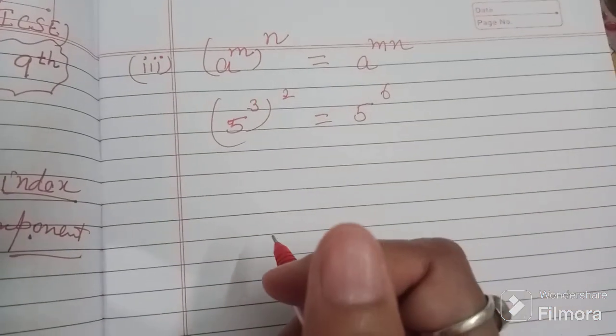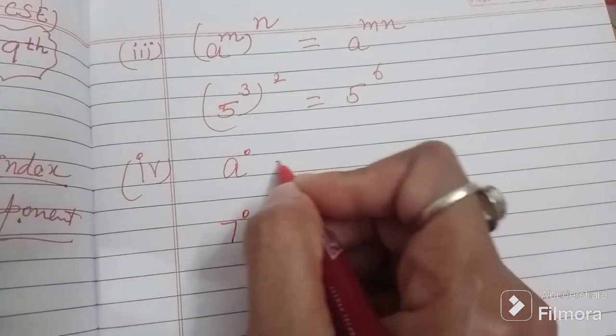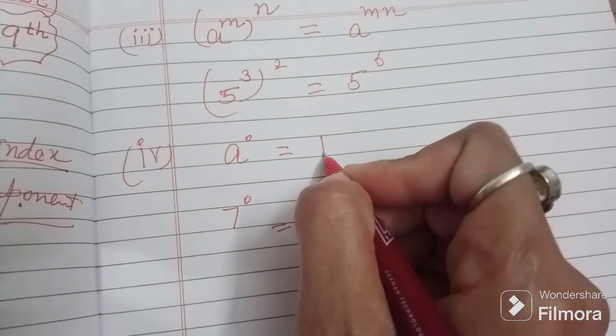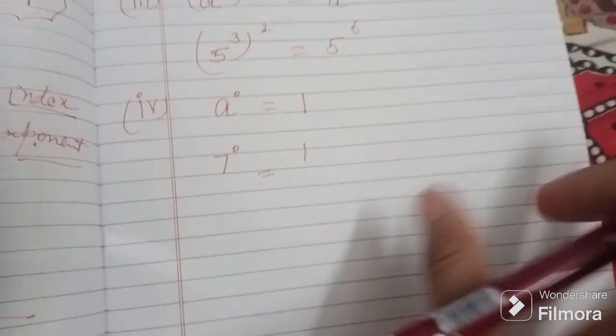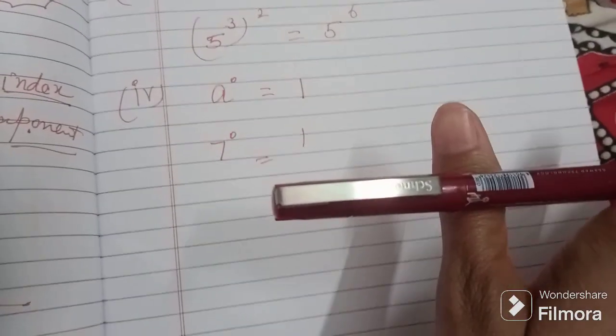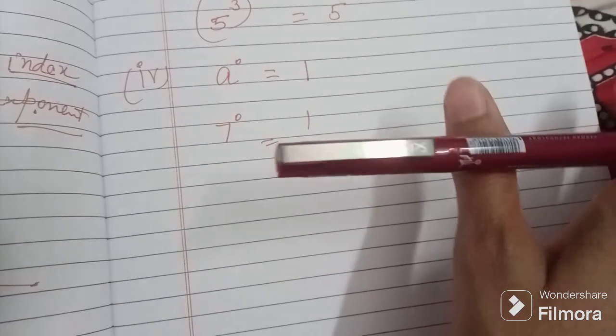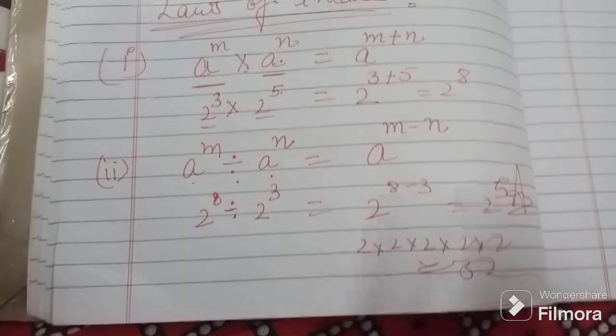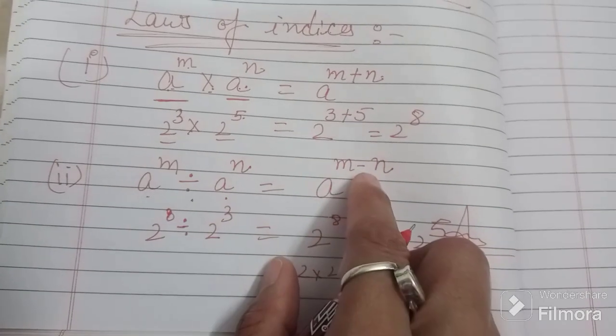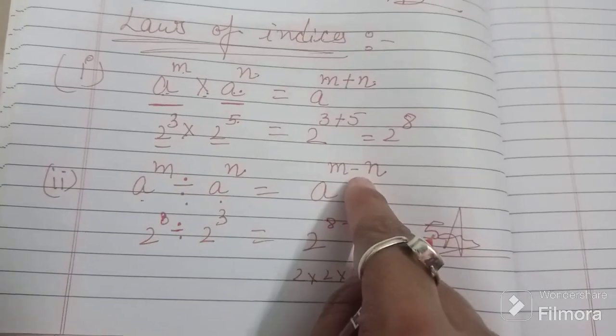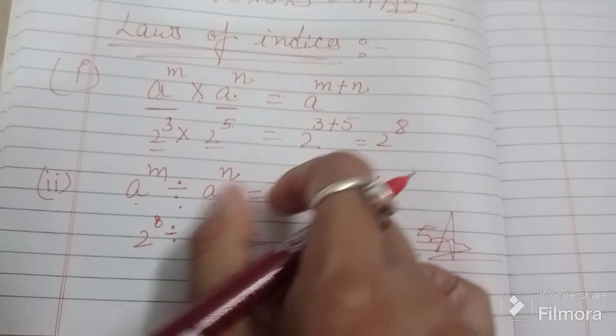Next, if something raised to the power zero, answer will always be one. Any number, any big number, any small number, plus or minus, whatever, if something raised to the power zero, answer will always be one. Clear. Now, how can we relate this? It is similar to negative sign. Minus and divide sign, multiply sign and plus, multiply is plus. But condition is that base will be the same.